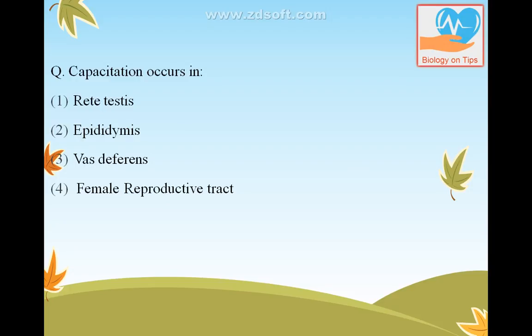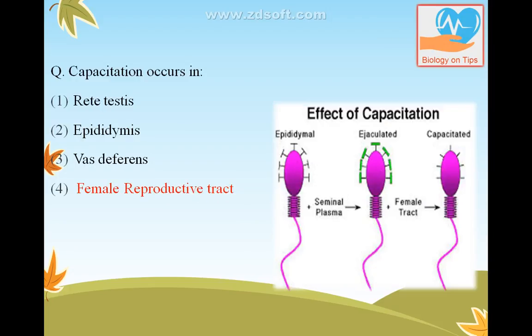Capacitation occurs in the female reproductive tract in order to increase the fertilizing capacity of sperms. So the answer is the female reproductive tract.